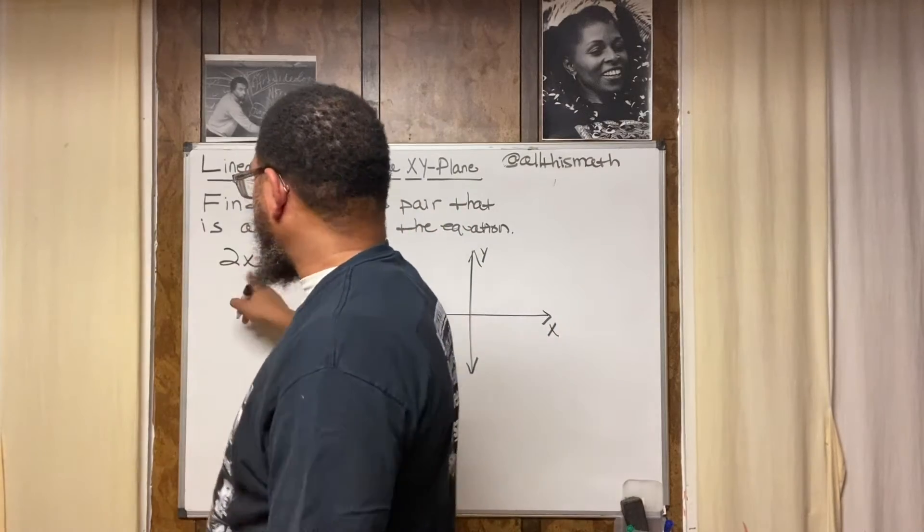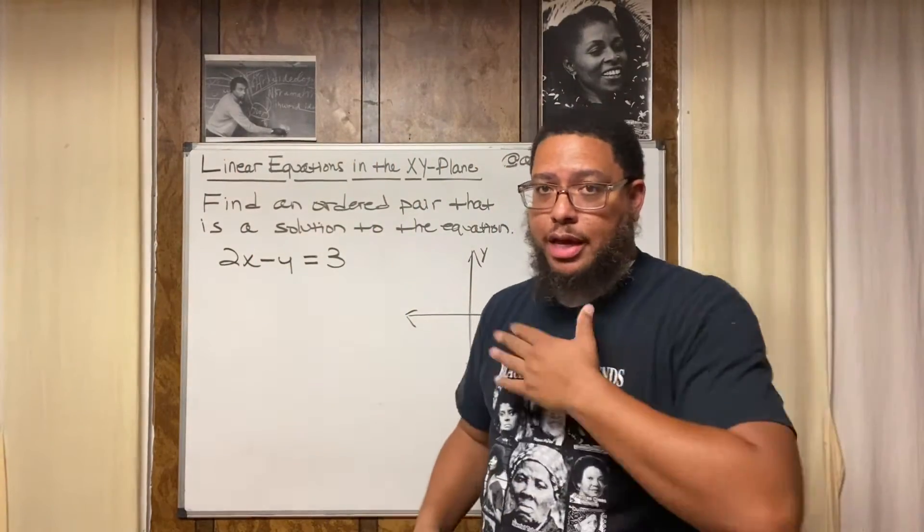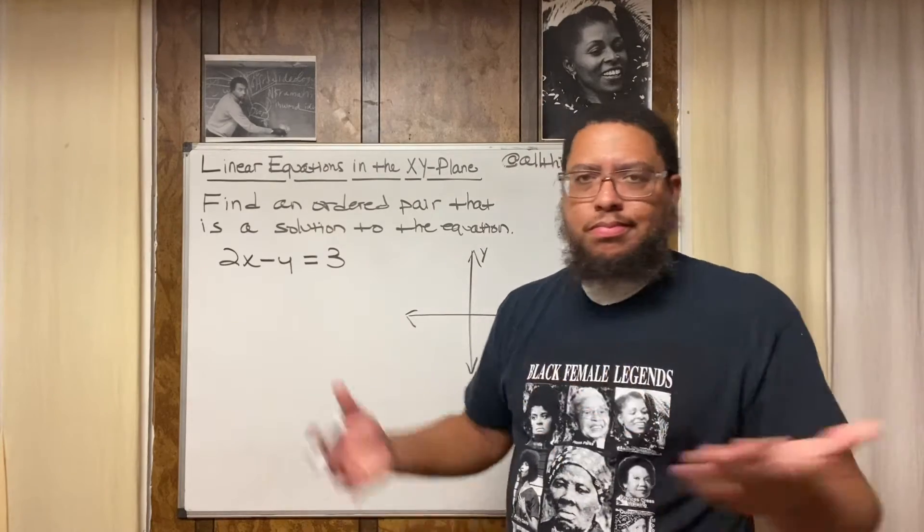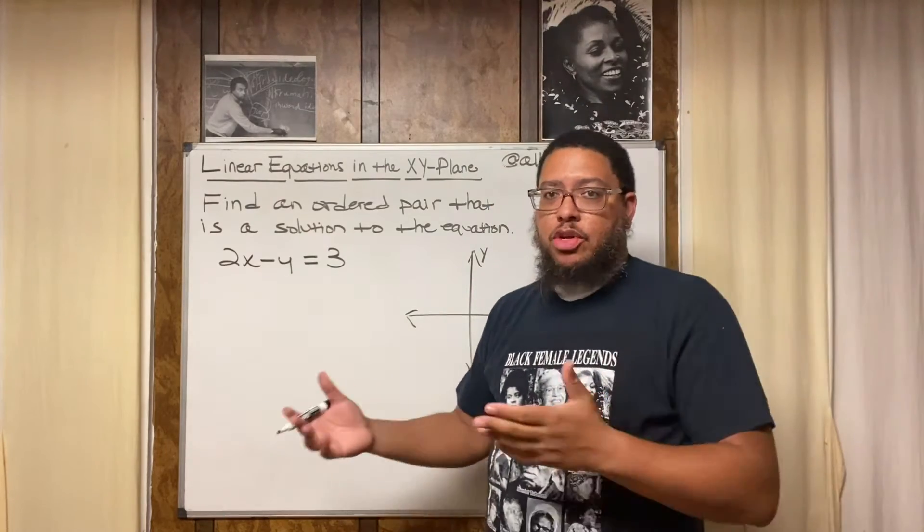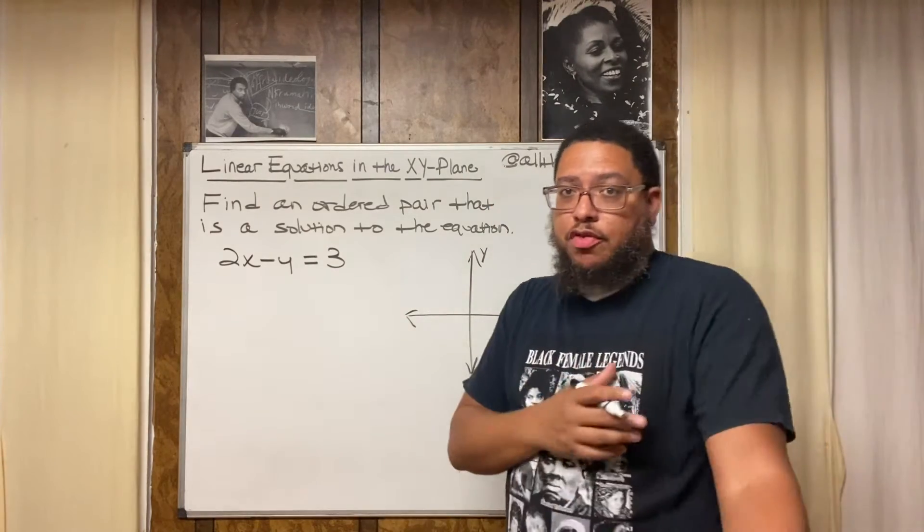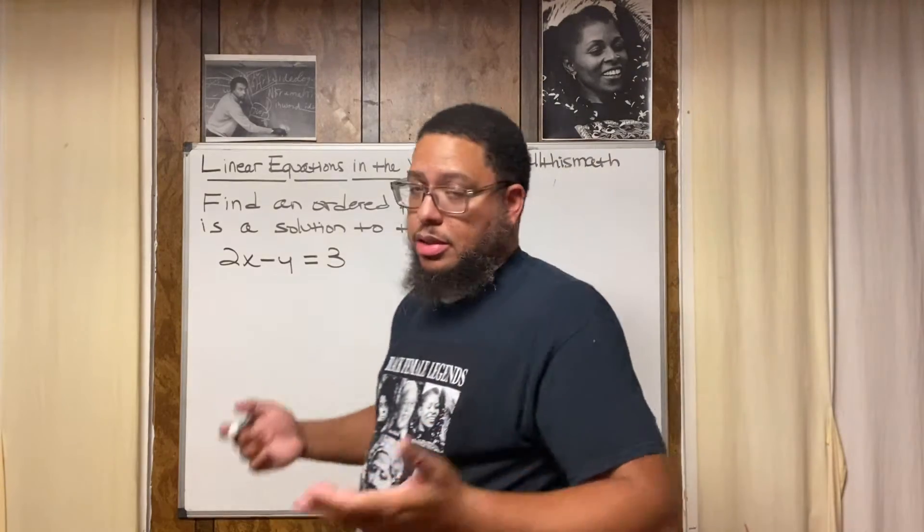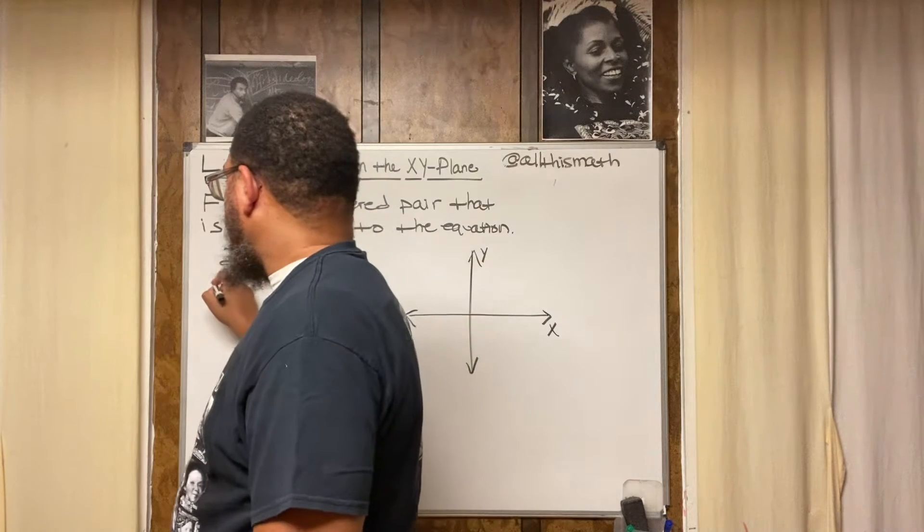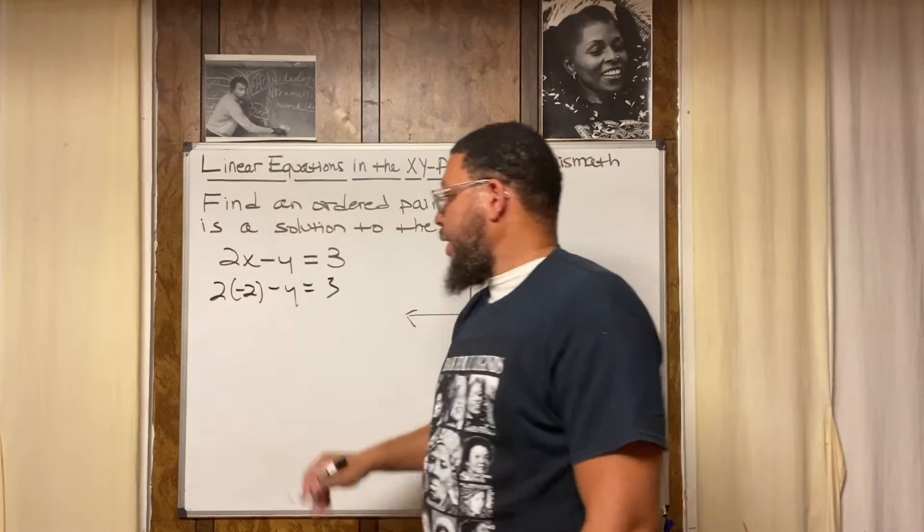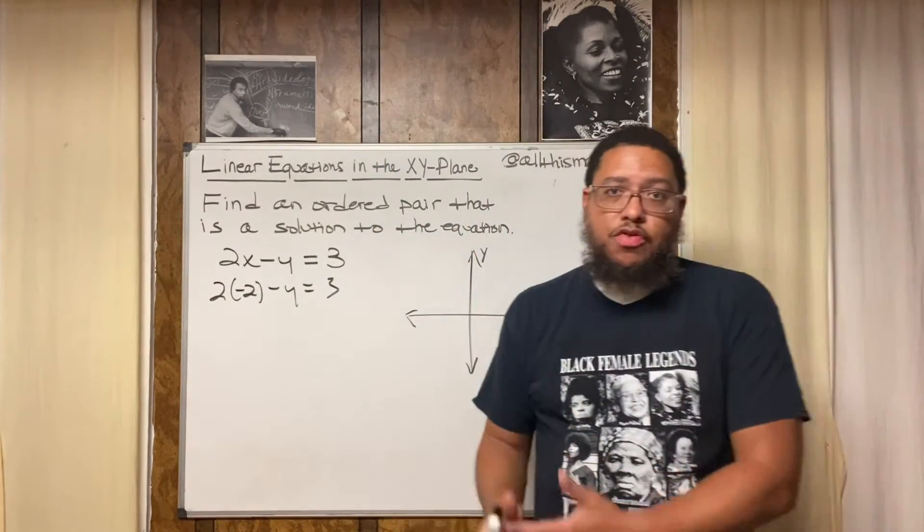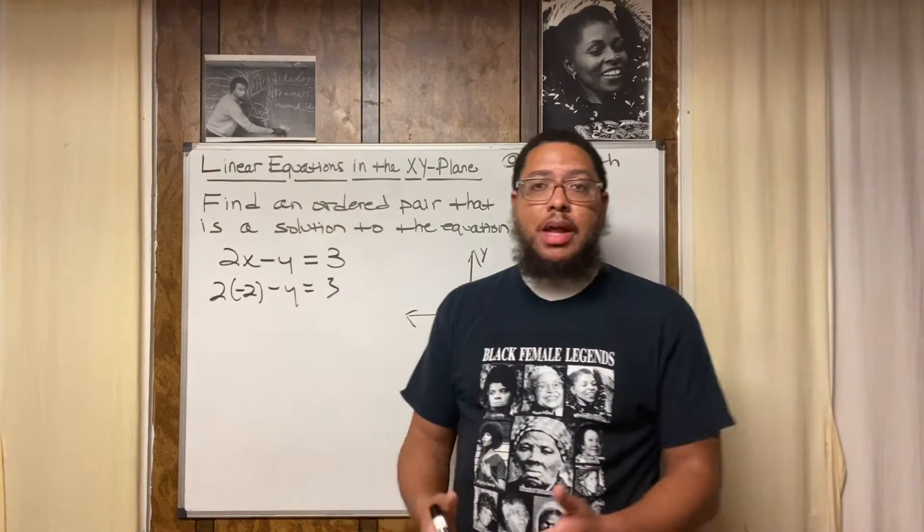So we're gonna have 2 times negative 2 instead of 2 times x. Now in case you wonder why am I choosing negative 2? No reason. It's random. In another video I chose zero, so I'm just trying to be different. I'm gonna use negative 2 just because I feel like it. So now I got 2 times negative 2 minus y is equal to 3. Now my goal is to solve for y.